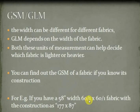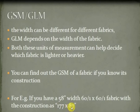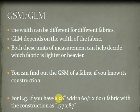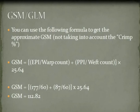The warp count is 60 single and weft count is 60 single. The fabric construction has ends per inch of 177 and picks per inch of 87. From this construction we can first calculate the GSM, and then we calculate the GLM as per this 58 inches width.